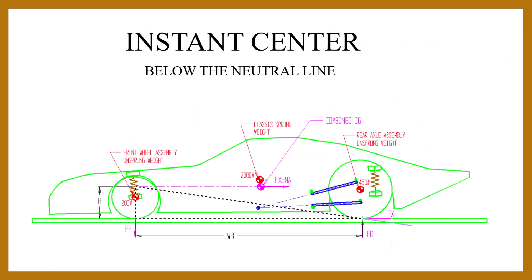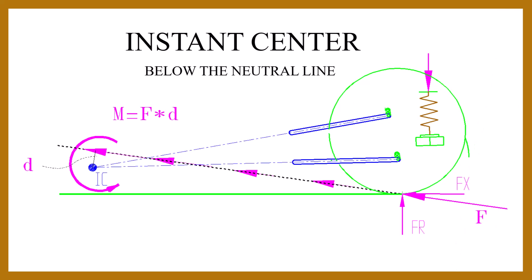When the projection of the 4-bar linkage is below the neutral line, this results in a moment or torque about the instant center. This causes vertical forces to occur. To counteract this moment, the vertical force at the instant center pushes down on the chassis, causing it to squat.